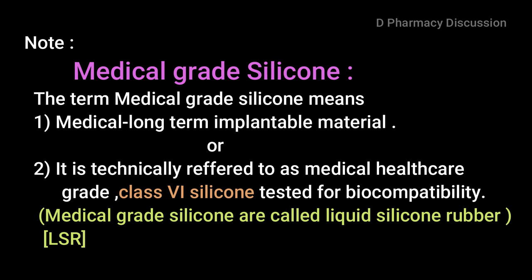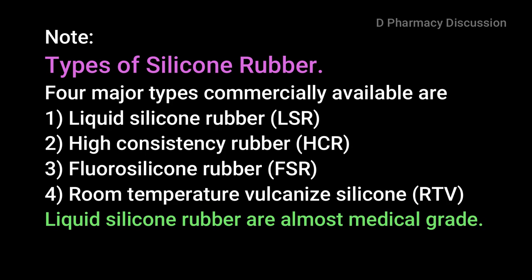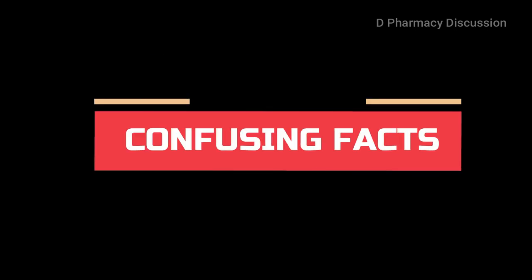The term 'medical grade silicone' means medical long-term implantable materials, technically referred to as medical healthcare grade Class 6 silicone, tested for biocompatibility. Medical-grade silicones are also called liquid silicone rubber (LSR). The four major types of silicone rubber commercially available are: liquid silicone rubber (LSR), high consistency rubber (HCR), fluorosilicone rubber (FSR), and room temperature vulcanize silicone (RTV). Liquid silicone rubbers are almost always medical grade.